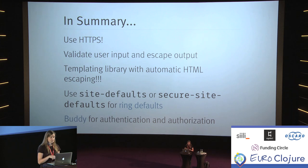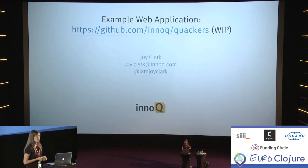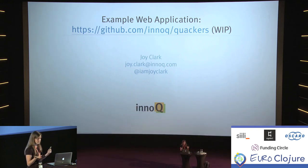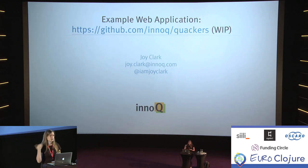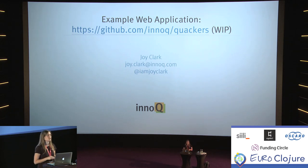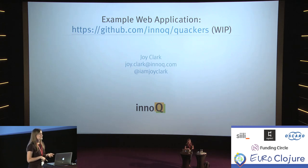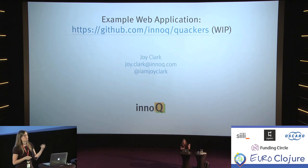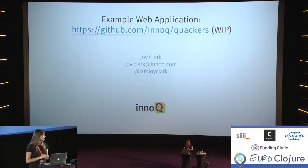In summary: use HTTPS; validate user input and escape user output; use templating libraries with automatic HTML escaping — unless you're a superhero, and then use them with automatic HTML escaping anyway. Look at the Ring Defaults for Ring applications to see what default middleware is available for your application. It's good to understand roughly what those different headers mean — it's not complicated and you can read up on them on OWASP. If you want to use authentication or authorization, look into using Buddy. As an example, I wrote a little Twitter clone for ducks, because they like quacking. It uses secure site defaults and Buddy authorization and authentication. You can look at that if you're interested. You can reach me at joy.clark@noq.com or on Twitter at Joy Clark. Thank you so much for your time.